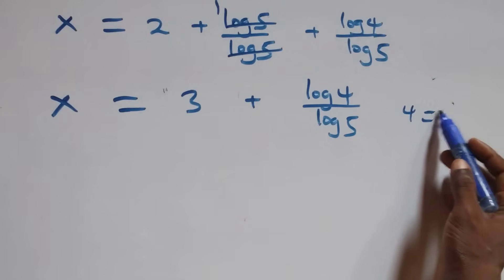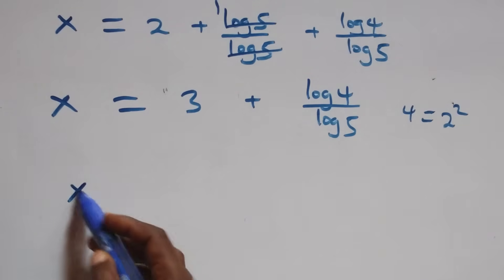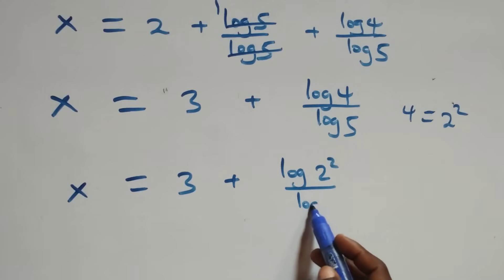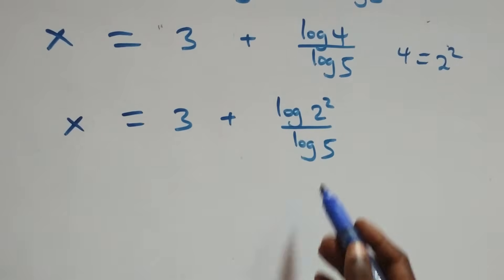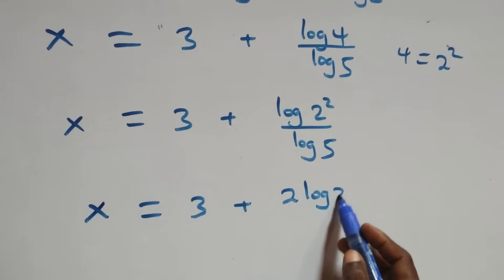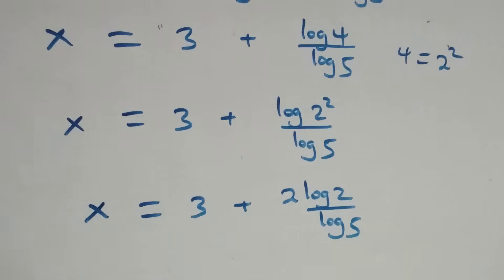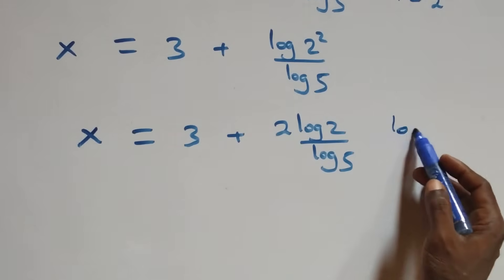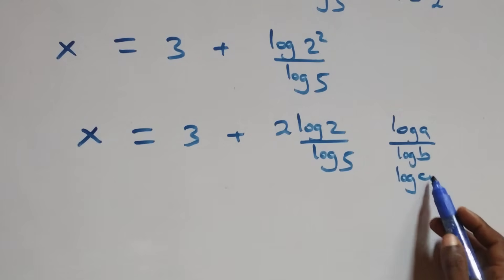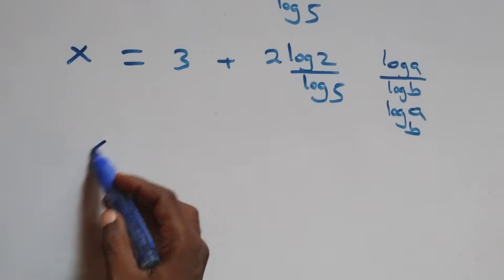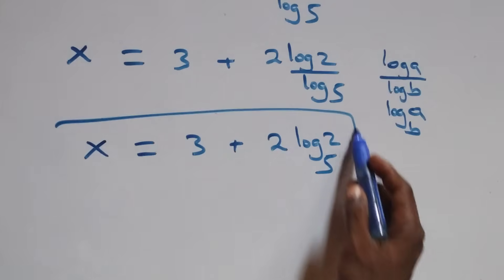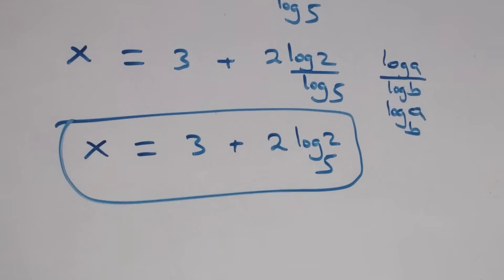Now 4 can be written as 2 times 2, which is 2 squared. So x equals 3 plus log(2 squared) over log 5. We apply the power rule of logarithms, bringing down the 2, giving x equals 3 plus 2 log 2 over log 5. We then apply the change of base formula: log A over log B is the same as log A to base B. Therefore x equals 3 plus 2 log₂ base 5 is our final answer.